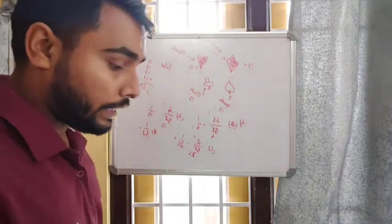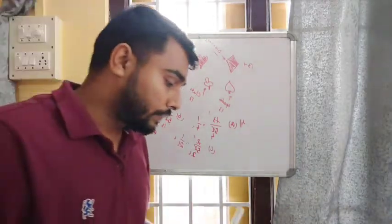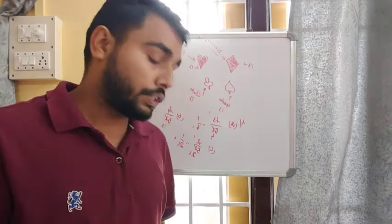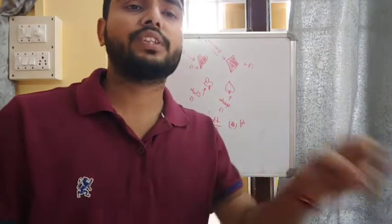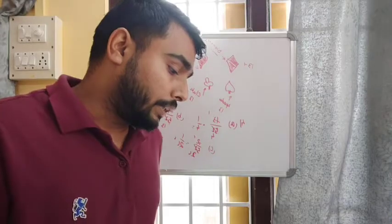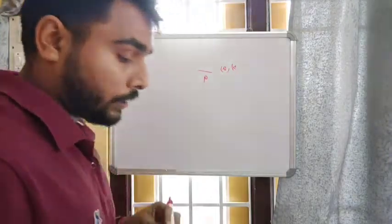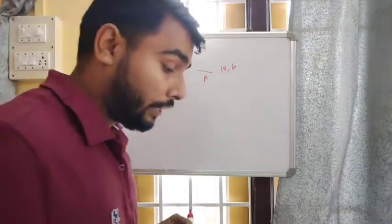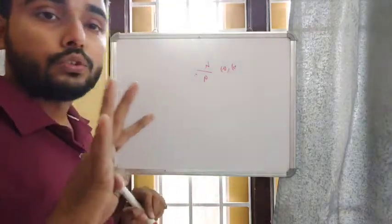Question number five: nine playing cards are numbered from two to ten. A card is selected at random. For number A, the probability that it is an odd number — the odd numbers among two to ten are three, five, seven, and nine, giving four favorable outcomes out of nine total outcomes. So the probability is four by nine.